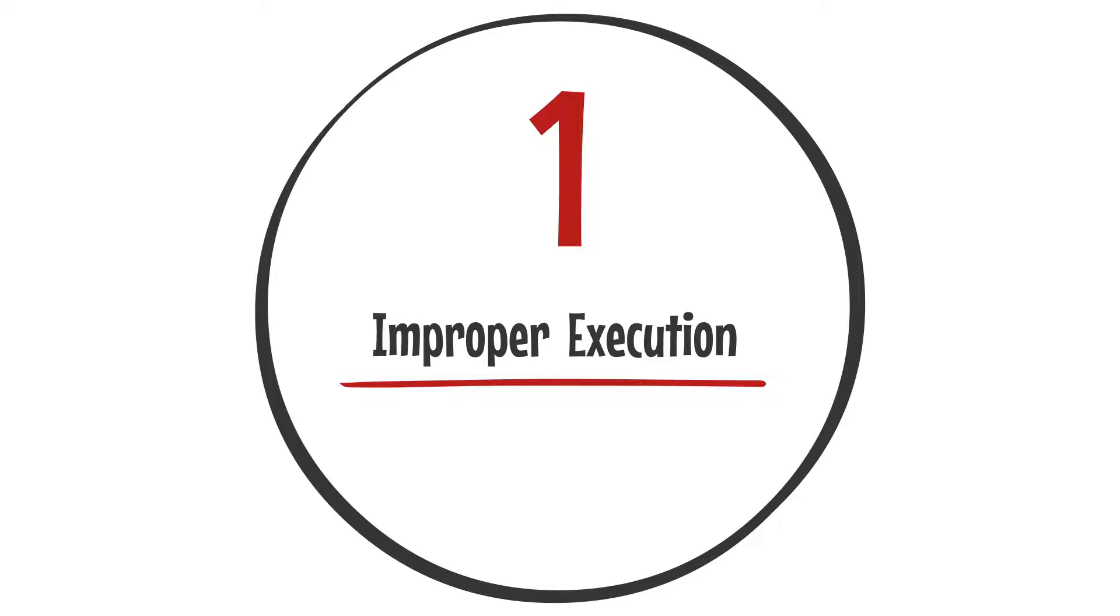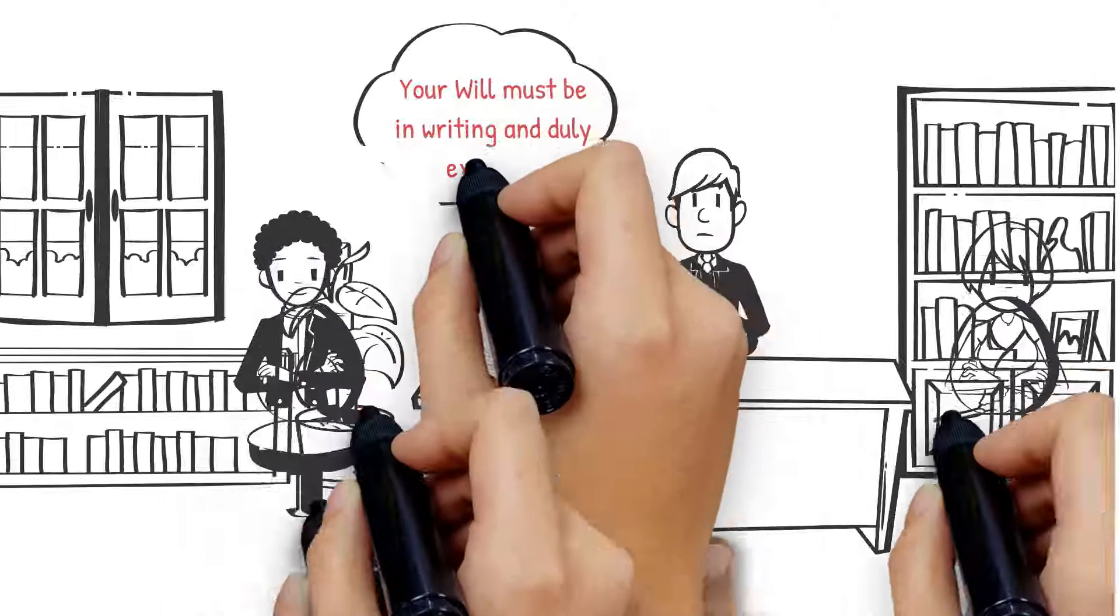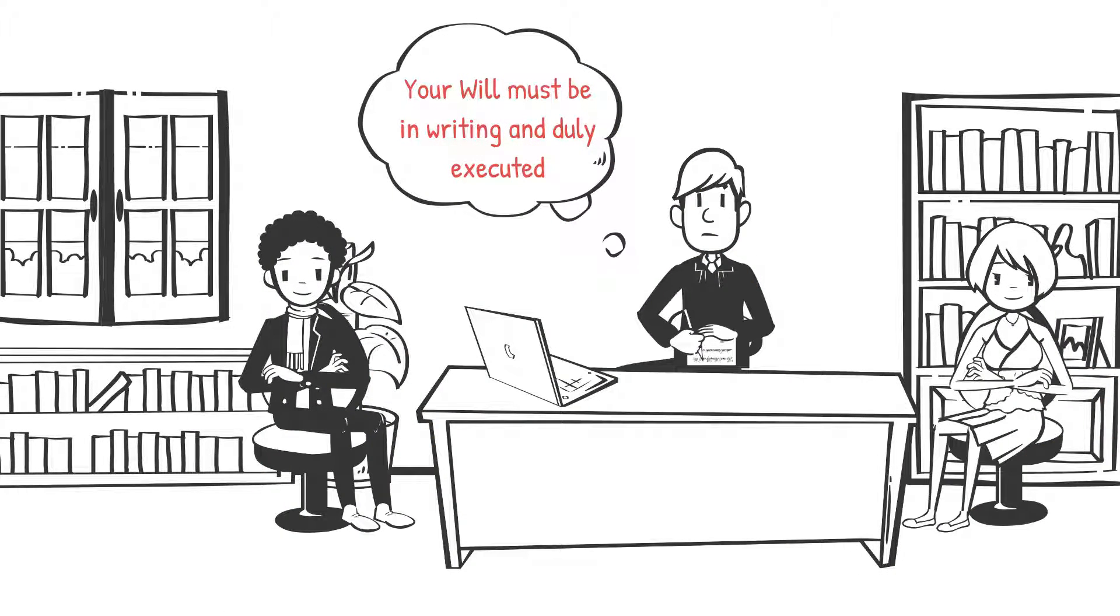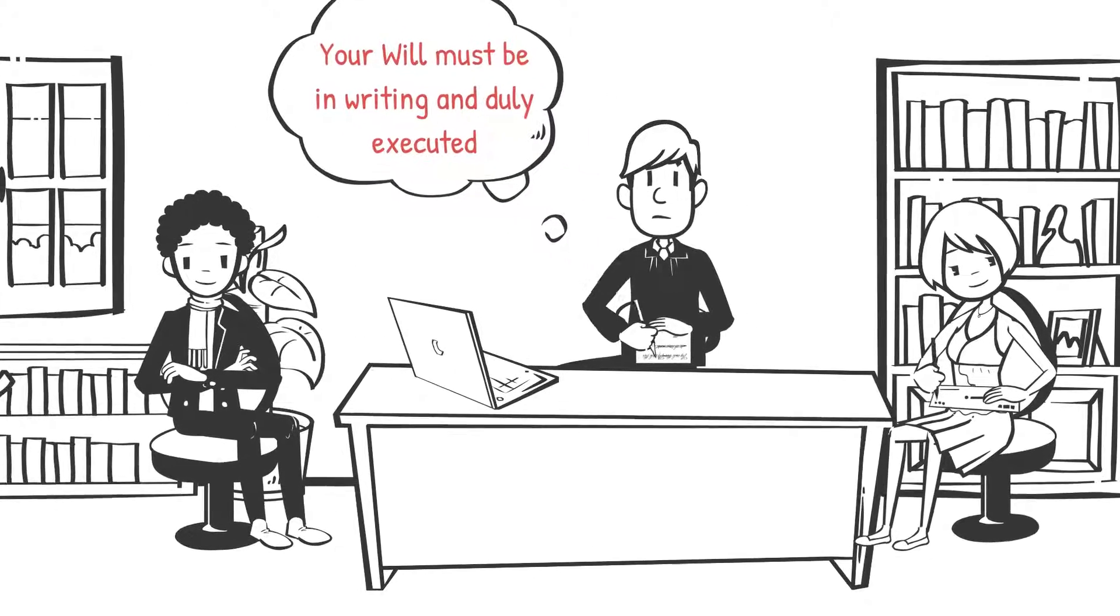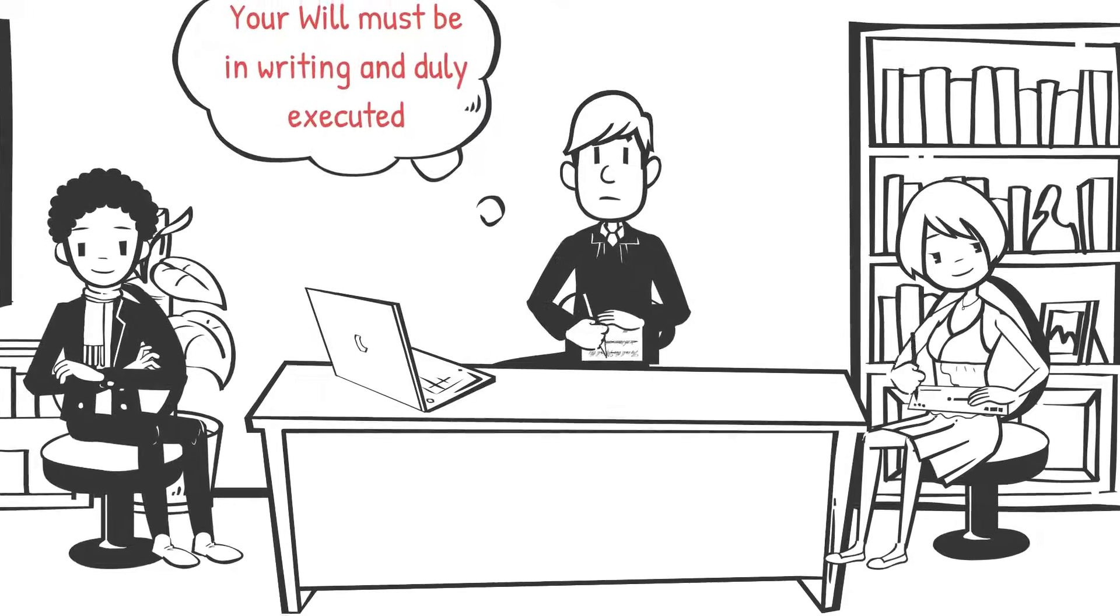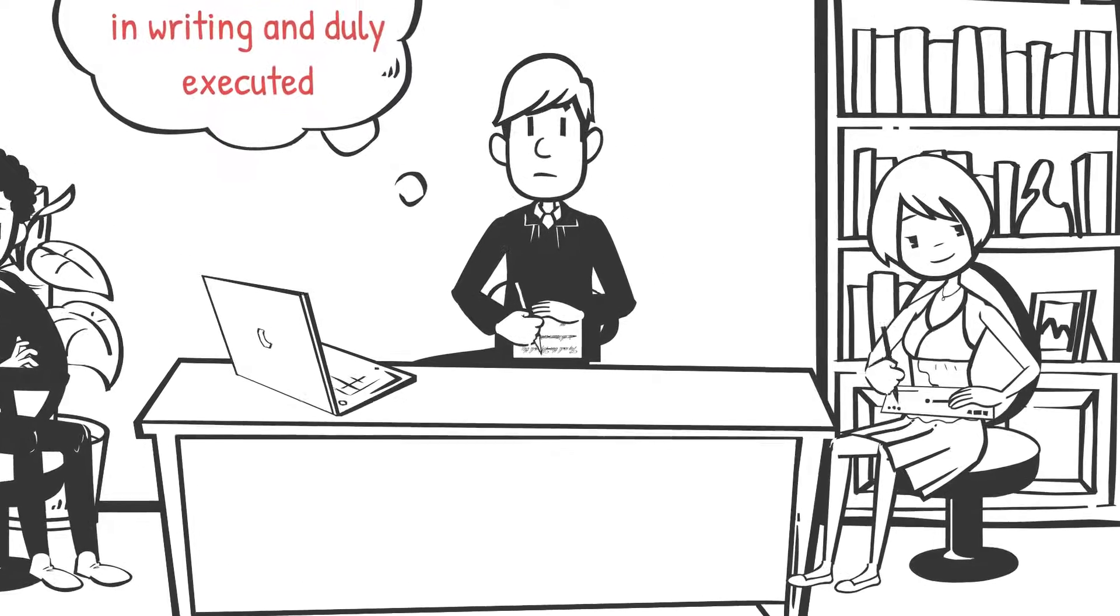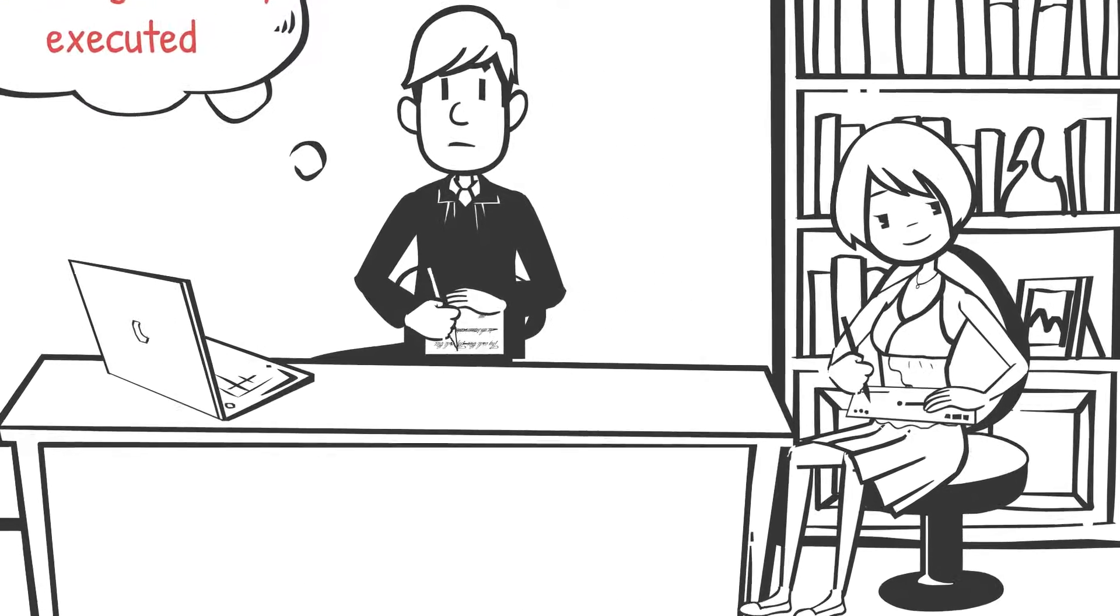Improper Execution. Section 9 of the Act requires that a will must be in writing and duly executed. This means it must be signed by the testator, or the testator needs to acknowledge their signature, in the presence of two witnesses at the same time.